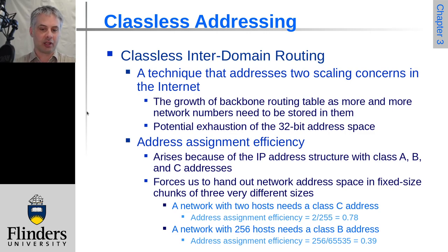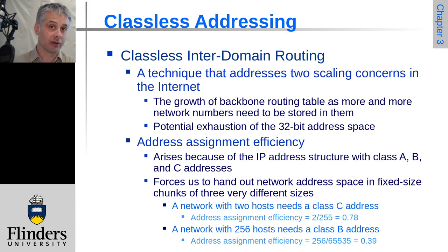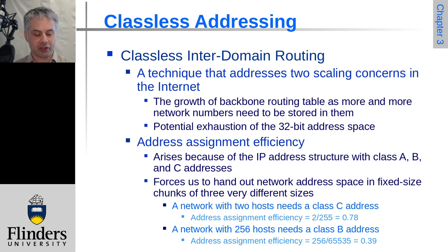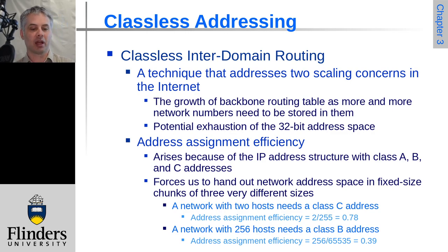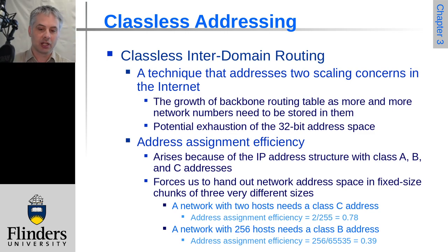The first issue is that the routing tables in backbone routers were getting much larger as the number of connected networks grew. You could have two million class C networks, roughly 65,000 class B networks, and 128 class A networks, so your routing table potentially needed a few million entries. This was a serious problem for core routers, which needed to be very fast.